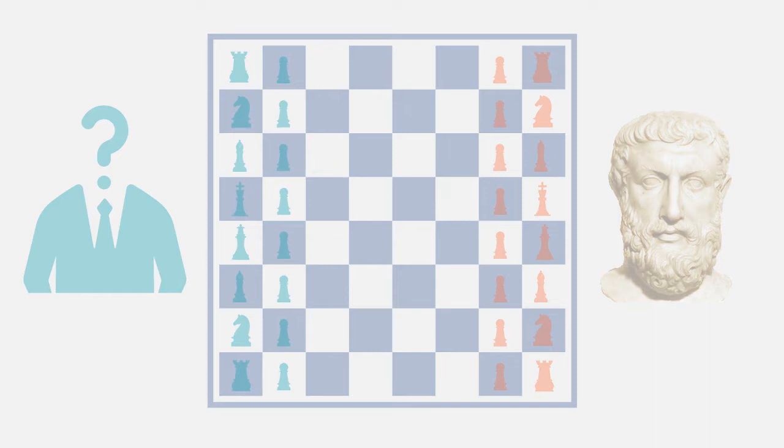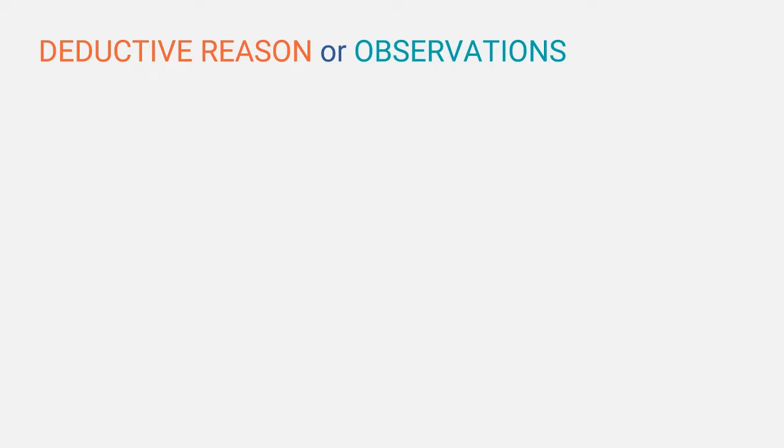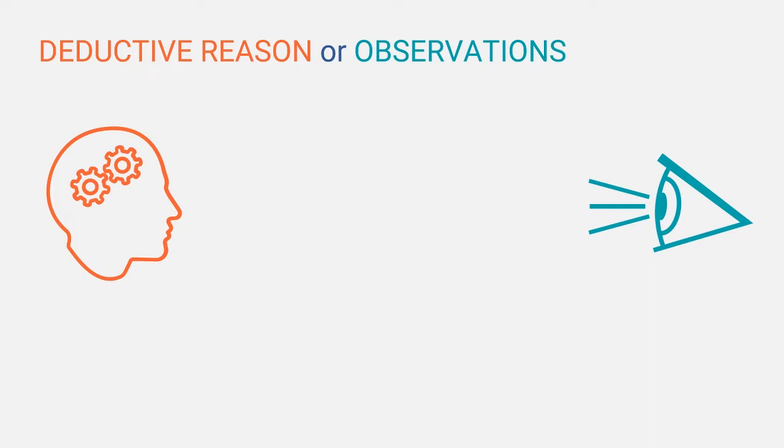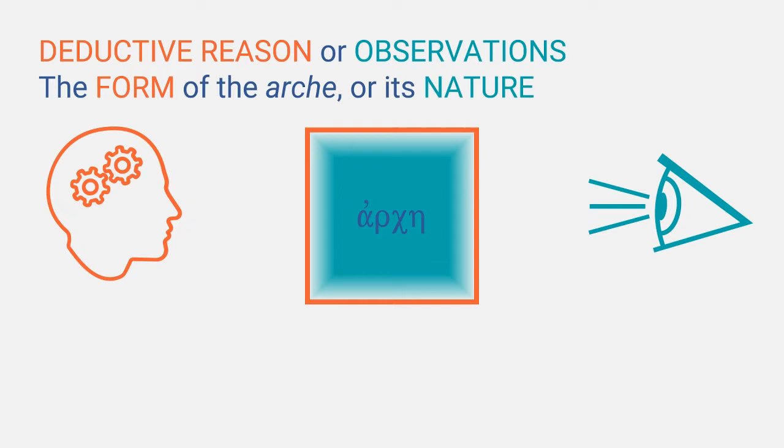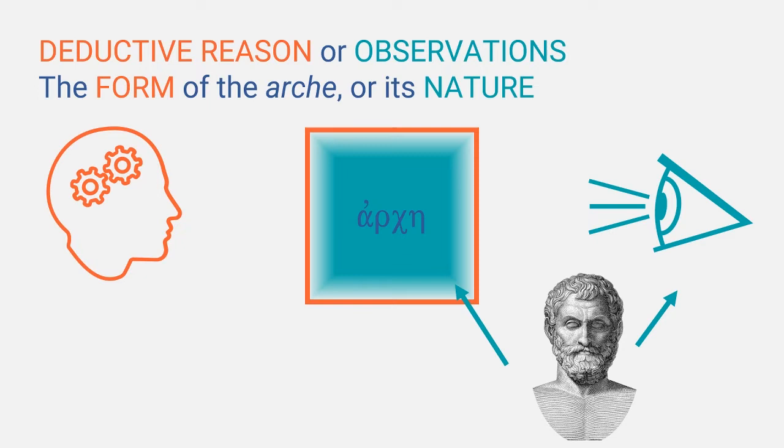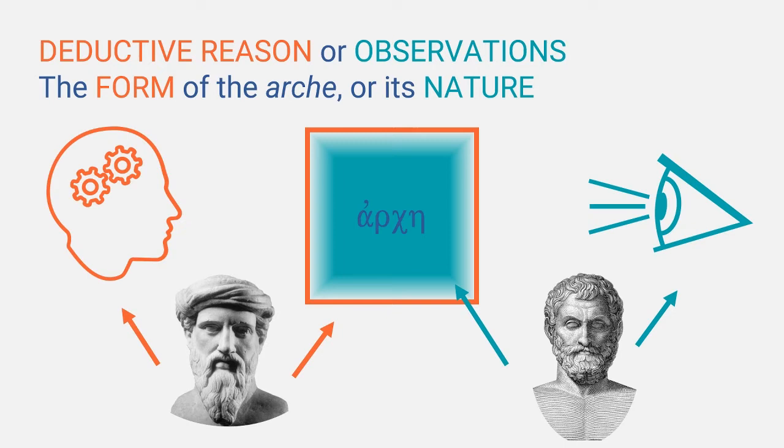Because if you remember the end of the video I did about Pythagoras, I mentioned that there are now two distinct ways of doing philosophy. One is a deductive reasoning where you engage in pure logic, and the other one was an observation followed by inductive reasoning while trying to make sense of your observations, and that philosophers can analyze both the nature of reality and the form of reality. The Milesians had so far mainly studied the nature of reality, and they used observation followed by inductive reasoning to form theories, while Pythagoras had tried to study the form of reality using mainly deductive reasoning or strict logic.